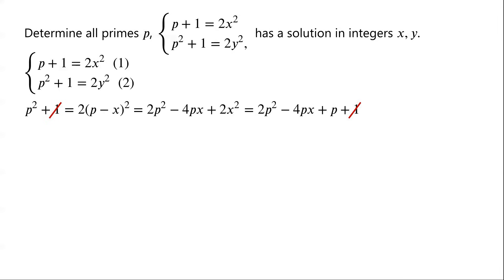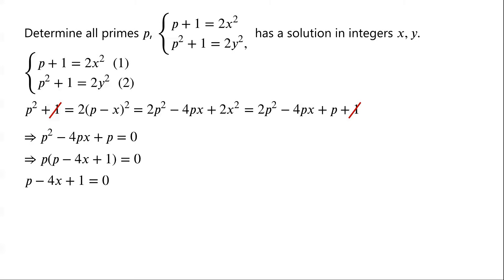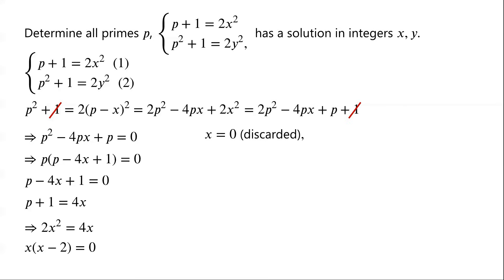The p plus 1 terms on both sides cancel. Simplifying, we have p squared minus 4px plus p equals 0. Factoring out p, we get p(p minus 4x plus 1) equals 0. Since p is an odd prime, p does not equal 0, so p minus 4x plus 1 equals 0, giving p plus 1 equals 4x. Combined with equation 1, 2x squared equals 4x, so x(x minus 2) equals 0.